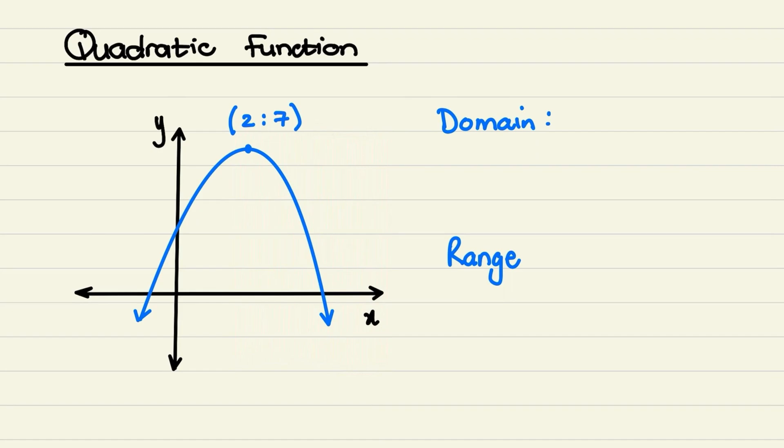So the domain, that is the x values, are all the real values or all the possible values for x, or it will exist from negative infinity to positive infinity.